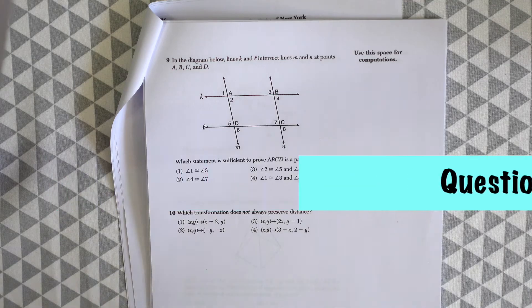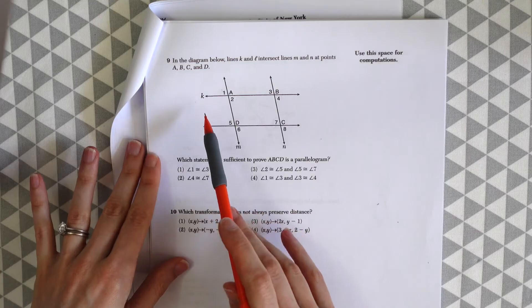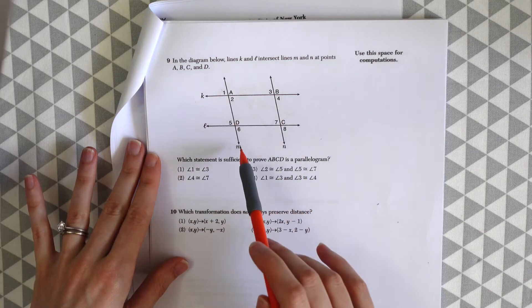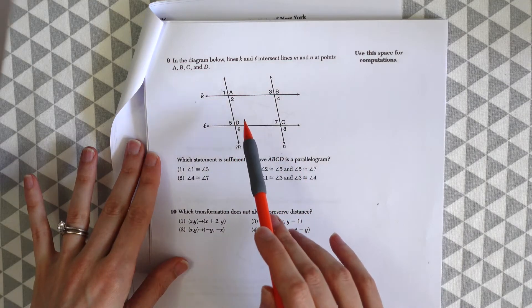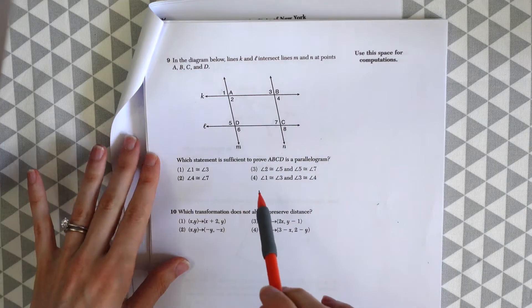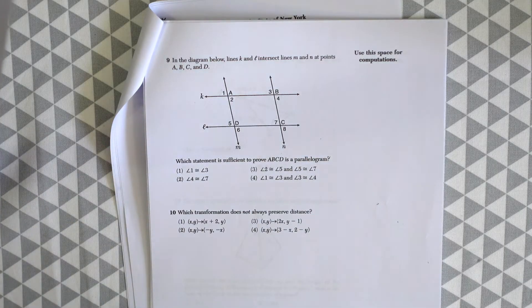Question number 9. In the diagram below, lines K and L intersects lines M and N at points A, B, C, and D. Which statement is sufficient to prove ABCD is a parallelogram?